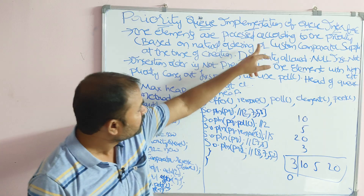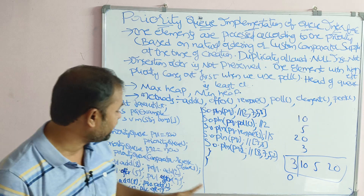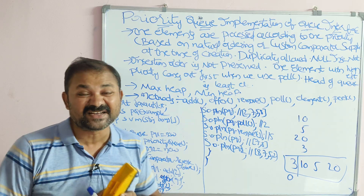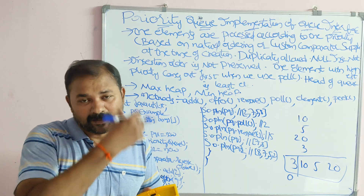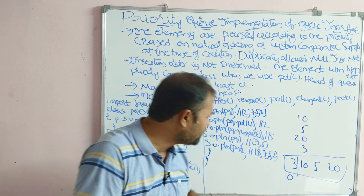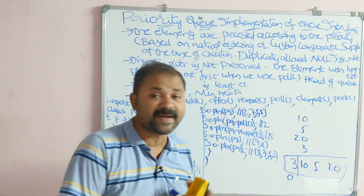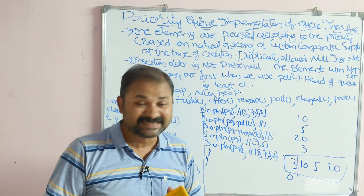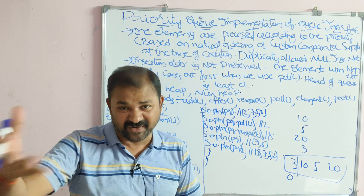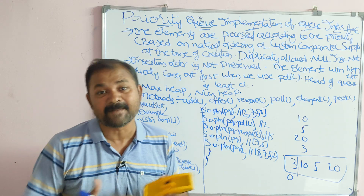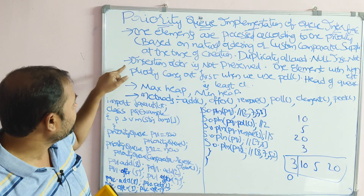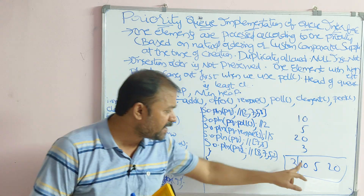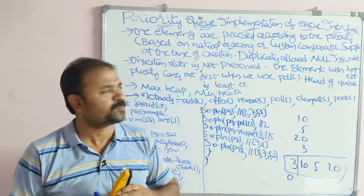Using Comparator.reverseOrder() means the largest element gets the highest priority. So out of these values, 20 is the maximum, so 20 will have the highest priority, then 10, then 5, then 3. Duplicates are allowed in Priority Queue — you can insert duplicate values. However, null insertion is not allowed; we cannot insert null values into the queue.